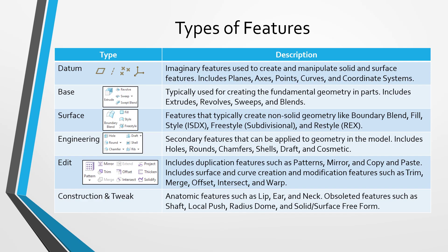Besides datum features, we have what are called base features. Base features generally follow the Pareto Principle, whereby about 20% of your features are responsible for creating 80% of the geometry in your model. Usually after you have your datums, you're going to create base features to add and remove the most geometry. Some of the base features include things like extrudes, revolves, sweeps, swept blends, and blends.